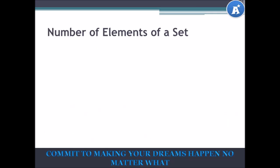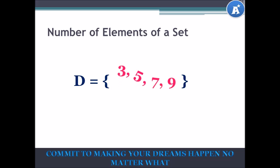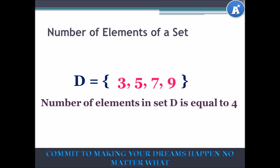Number of elements of a set. D is equal to {3, 5, 7, 9}. How many elements are there in D? 1, 2, 3, 4. Therefore, we can see that D has 4 elements. The number of elements in set D is equal to 4. That is stated as N(D) = 4, which means the number of elements in set D is equal to 4.